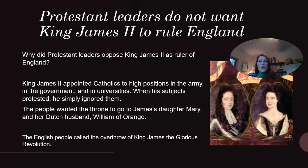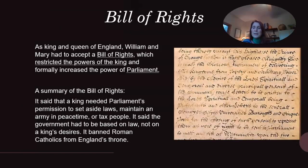The English people called the overthrow of King James the Glorious Revolution — to overthrow meaning to come in and take over the government. As King and Queen of England, William and Mary had to accept a Bill of Rights, which restricted the powers of the king and formally increased the powers of Parliament.